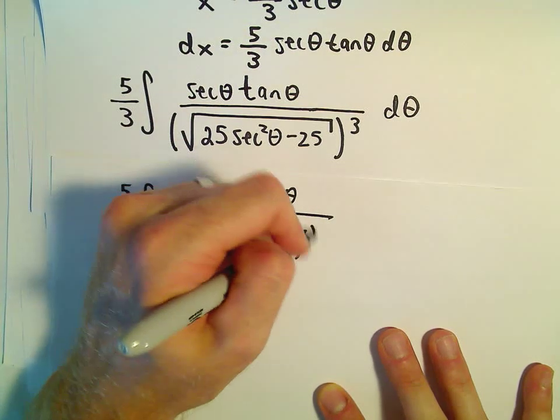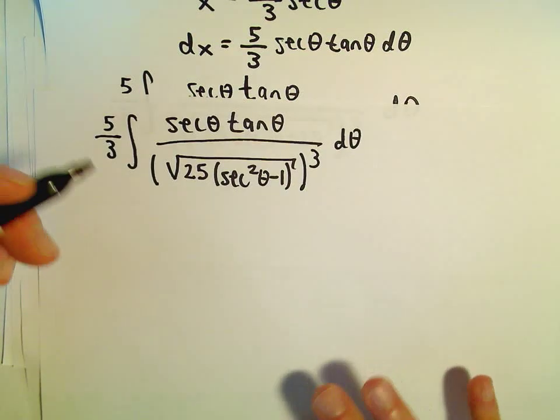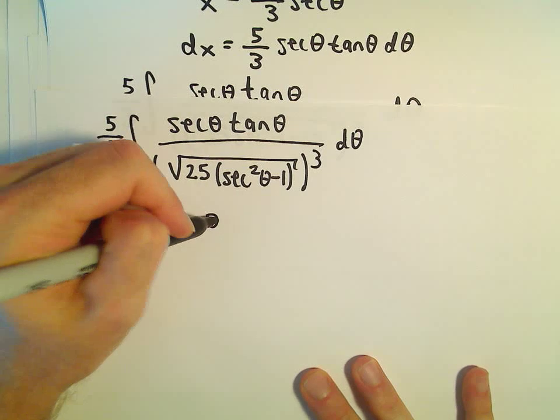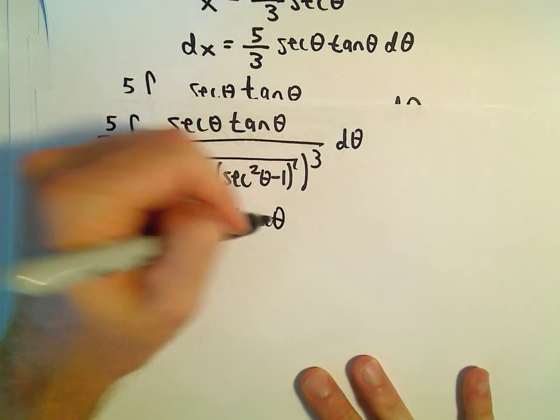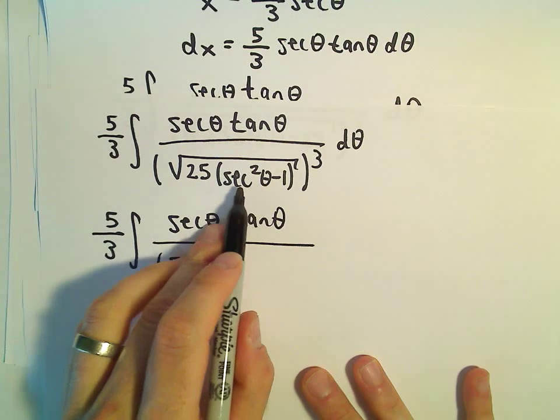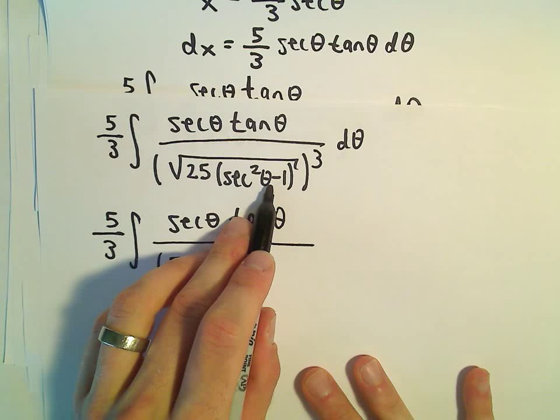Again, all of that being cubed d theta. So we have 5 thirds secant theta times tangent theta. Well, our 25 could come out as a 5. Our secant squared theta minus 1, we could replace that with tangent squared theta.